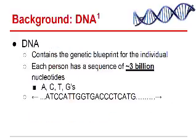To begin with, just a quick background about DNA. DNA contains the genetic blueprint for an individual and each person has a sequence of around 3 billion nucleotides. These nucleotides are called A, C, T, and G. Each person has a different genetic blueprint, but everyone has the same number of chromosomes for the most part and the same number and types of genes.